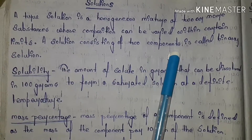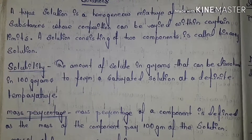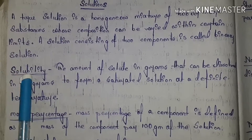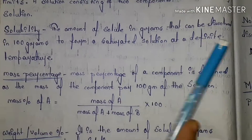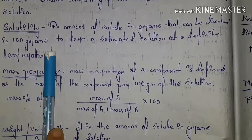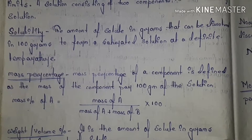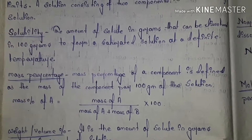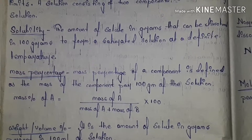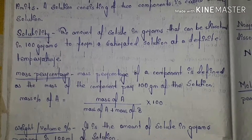A solution consisting of two components is called a binary solution — binary means two. Solubility: the amount of solute in grams that can be dissolved in 100 grams of solvent to form a saturated solution at a definite temperature. Solubility means — at a particular temperature, how much of a solute dissolves in 100 grams of solvent to form a saturated solution — that quantity is called solubility.